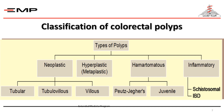Another group is the hamartomatous polyps, characterized by abnormal arrangement of the layers — the submucosa and muscularis mucosa are in haphazard, abnormal order. The two prototypes of hamartomatous polyps are Peutz-Jeghers syndrome and juvenile polyps. All these polyp types — neoplastic, hyperplastic, and hamartomatous — can occur as one, two, three, multiple, or hundreds in a polyposis syndrome.